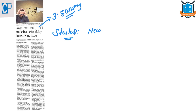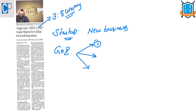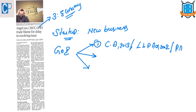But according to the Government of India, for a company to be certified as a startup it has to satisfy three conditions. The first condition is that the company should be registered under either of three acts: the Companies Act of 2013, the Limited Liability Partnership Act of 2002, or the Partnership Act of 1932.